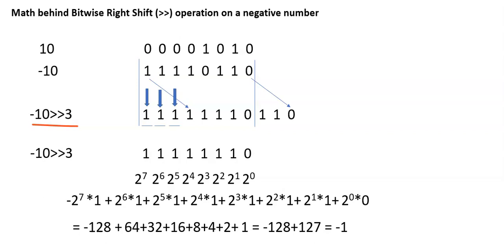In order to find out this value, first of all we need to find out minus 10 in binary format. To do that, we first take plus 10 and write it in binary format. The binary value of plus 10 in 8 bits is 00001010.